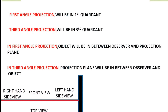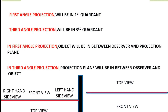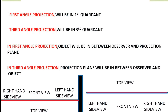In third angle projection, this is the reference line. The top view will be on top, the front view below the top view, the left-hand side view will be on the left-hand side of the front view, and the right-hand side view will be on the right-hand side of the front view.